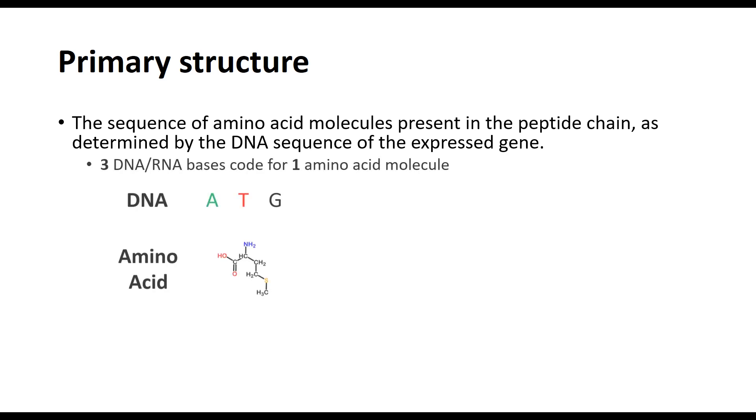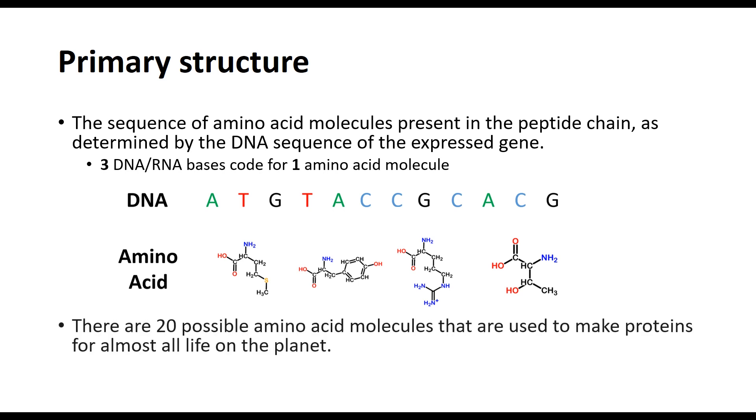The DNA form of the gene goes through the processes of transcription and translation, which you can find out more about in the video linked here, to form the amino acid chain with the help of a ribosome. In the translation process, each set of three bases leads to the addition of one extra amino acid to the peptide chain. There are 20 commonly used amino acid molecules that our DNA can code for, and this is the same for almost every organism on the planet.